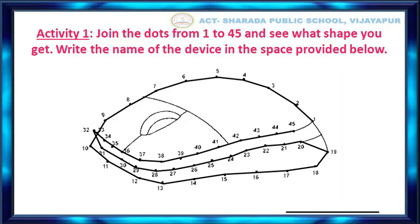Let us now write the name of the machine in the blanks given below. The correct spelling of mouse is M-O-U-S-E, mouse.